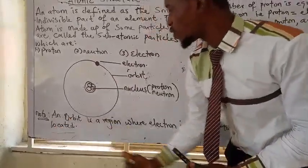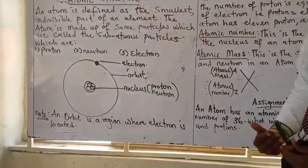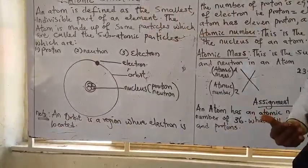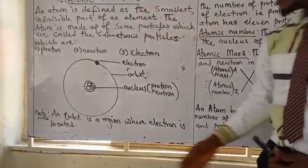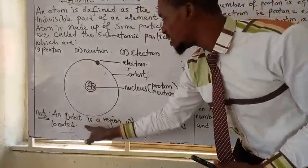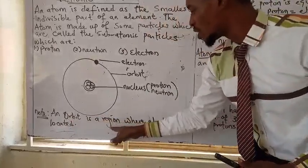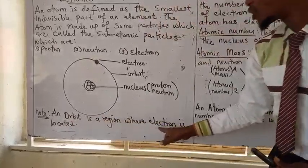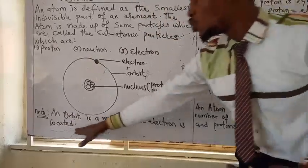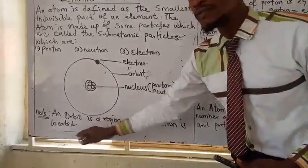Take note of this added definition: an orbit is a region where the electron is located.